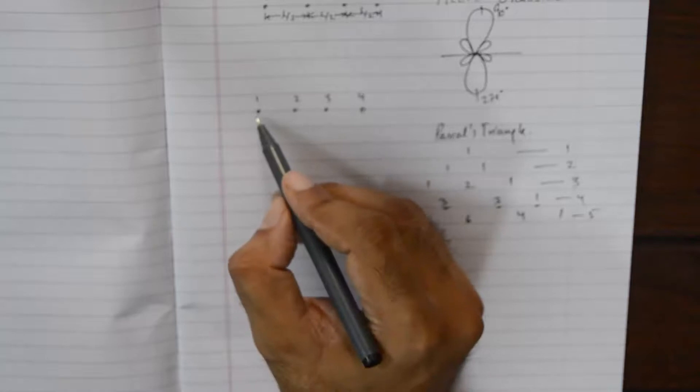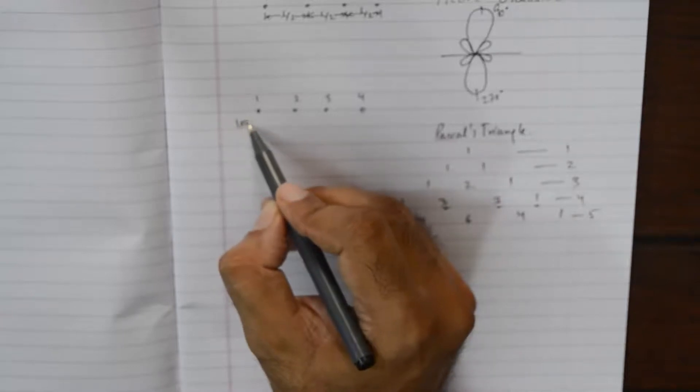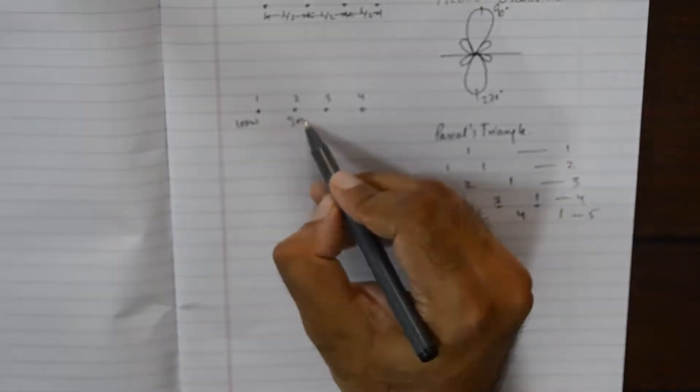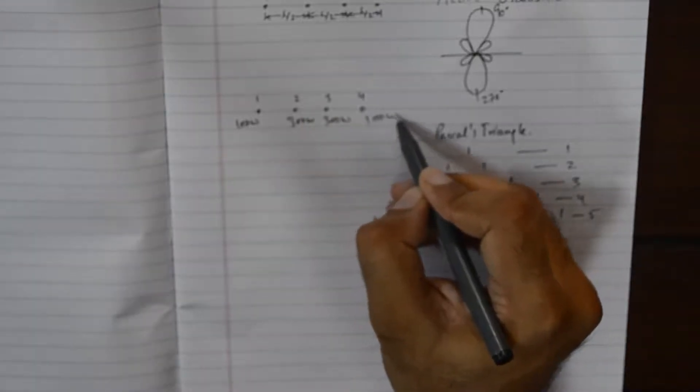One is to three is to three is to one. So the elements along the ends will have energy, let us say 100 watts, and these are going to have 300 watts, 300 watts and 100 watts again. The distribution of energy is governed by the coefficient as calculated by the Pascal's triangle.